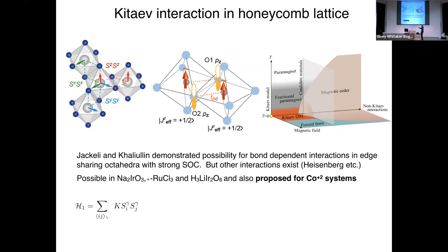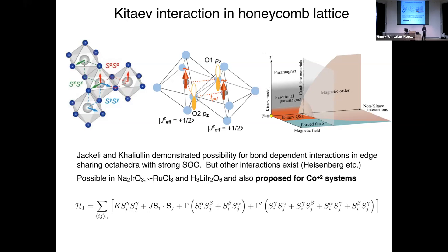The full symmetry-allowed Hamiltonian on the hexagonal lattice doesn't just have the Kitaev term; it also has a Heisenberg term J, which in an ideal case is a small perturbation on the larger Kitaev term. There's also the off-diagonal gamma term, and frequently a gamma-prime term allowed if the lattice has a trigonal distortion. One can also have a J3 next-nearest-neighbor term and an applied magnetic field — that would be the full Hamiltonian.